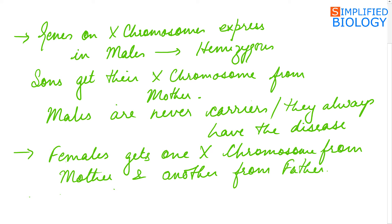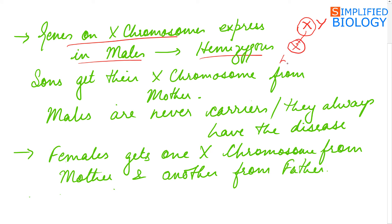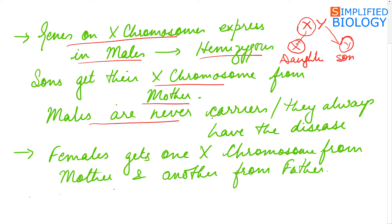Genes on X chromosomes express themselves in males because males are hemizygous, meaning they have a single X chromosome without a homologue, so all genes present in it will express themselves. The father never transfers his X chromosome to his son; he transfers it to his daughter, while the Y chromosome goes to the son. Sons always get the X chromosome from the mother. Since males have a single X chromosome, they are never carriers — they always have the disease. Females have two X chromosomes: one from the mother and one from the father.